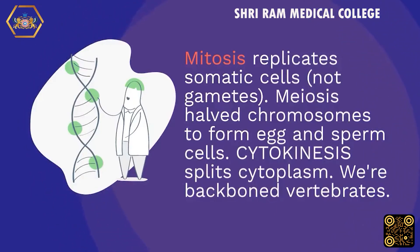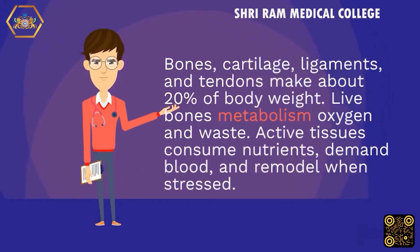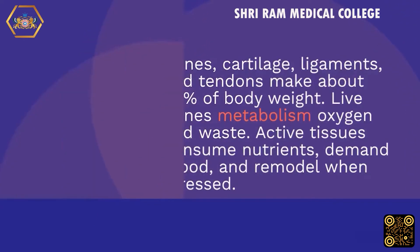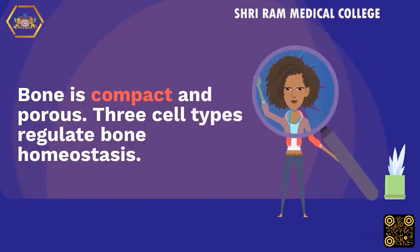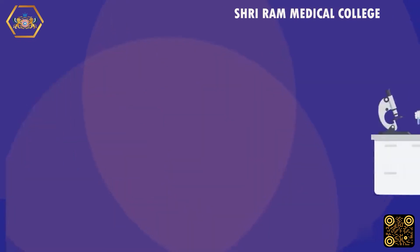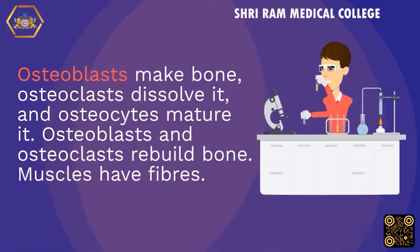We are backbone vertebrates. Bones, cartilage, ligaments, and tendons make up about 20% of body weight. Living bones metabolize oxygen and waste. Active tissues consume nutrients, demand blood, and remodel when stressed. Bone is both compact and porous. Three cell types regulate bone homeostasis: osteoblasts make bone, osteoclasts dissolve it, and osteocytes mature it. Osteoblasts and osteoclasts work together to rebuild bone.